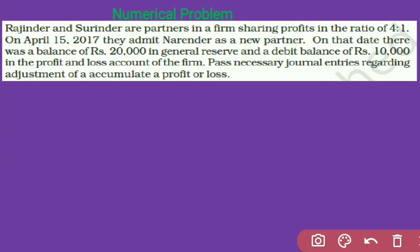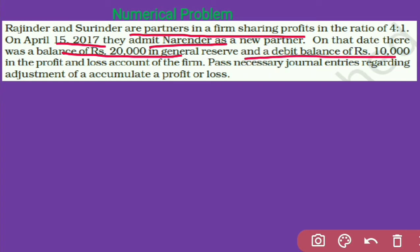Rajinder and Surrender are partners in a firm sharing profits in the ratio of 4:1. On April 15, 2017, they admit Narender as a new partner. On the date there was a balance of rupees 20,000 in general reserve and a debit balance of rupees 10,000 in profit and loss account of the firm. Pass necessary journal entries regarding adjustment of accumulated profit or loss.